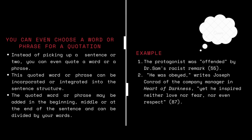For example, here in the first example, you must have seen that only a single word has been chosen for quoting purposes. The protagonist was 'offended' — this particular word 'offended' is the only word chosen from the original source. So: 'The protagonist was offended,' close the quotation marks, by Dr. Sam's racist remark. And here at the end, you bring in the page number for reference and then comes the full stop.